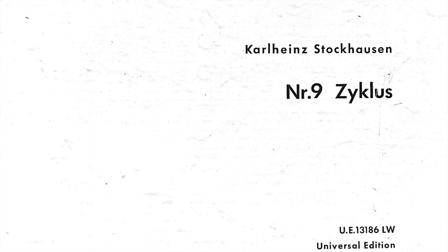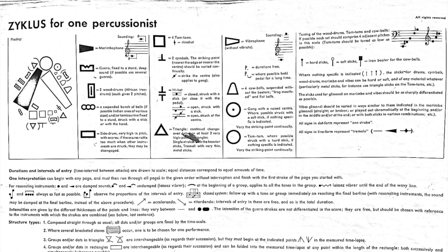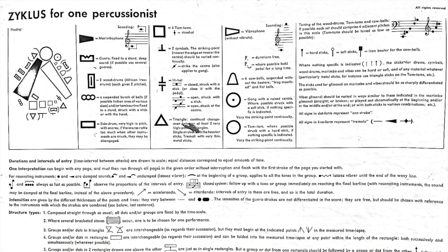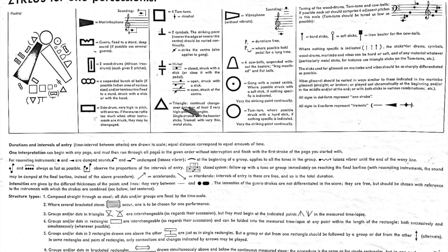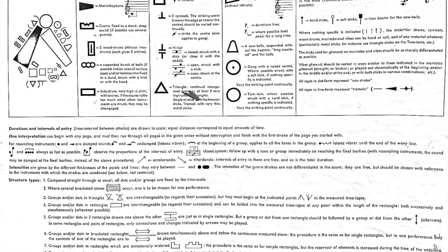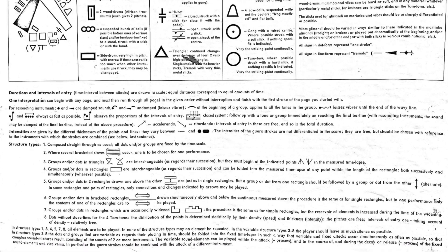I open the score of Stockhausen's Zyklos dated 1959 for one percussionist. After observing the complexity of the performance notes, I attempt to decipher the first page of the actual written music. According to the composer's instruction, the piece can begin from any of the score's 16 pages, running through all the pages in the given order, from which comes the score title Zyklos, up to the first entry, percussive stroke, on the page that the performer started with.